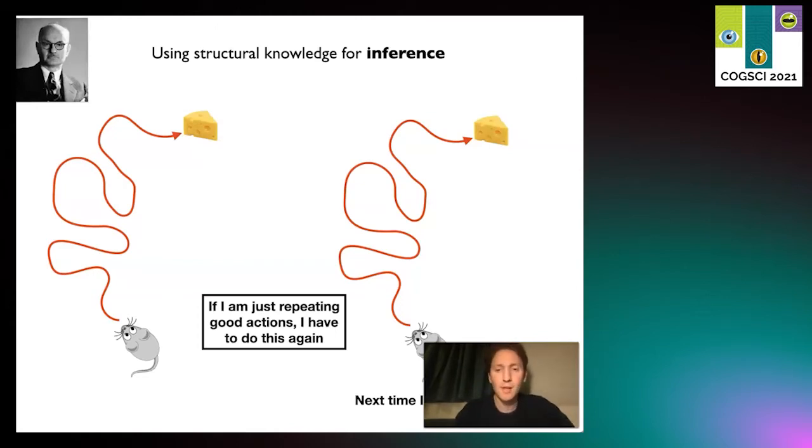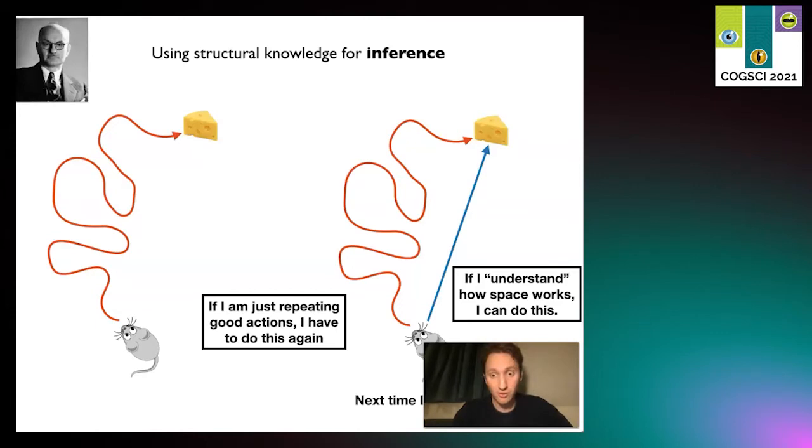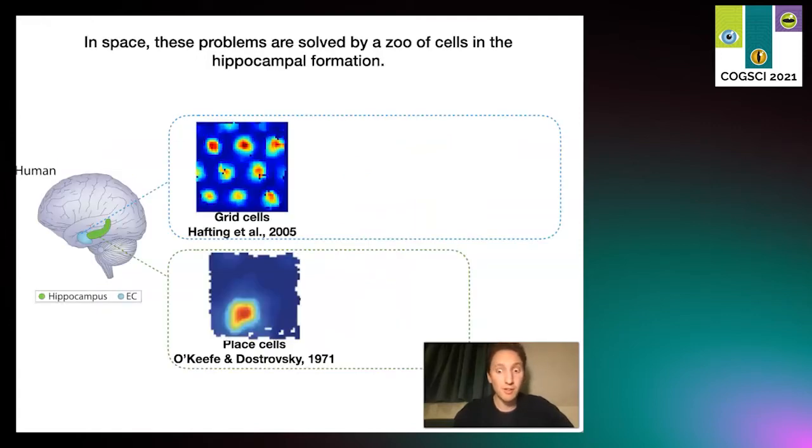But if it actually understands something more about the world, it doesn't have to repeat all the same actions - it can take a shortcut because it knows some actions might have led it in a loop. What Tolman found is these animals did take shortcuts, deeply implying animals store some functional internal model which he named a cognitive map.